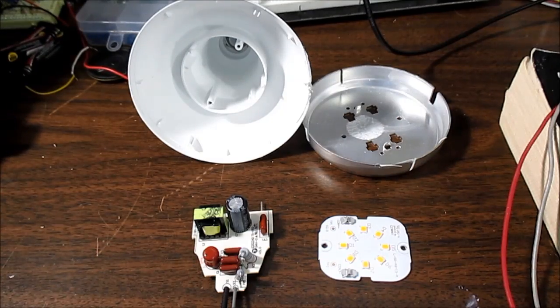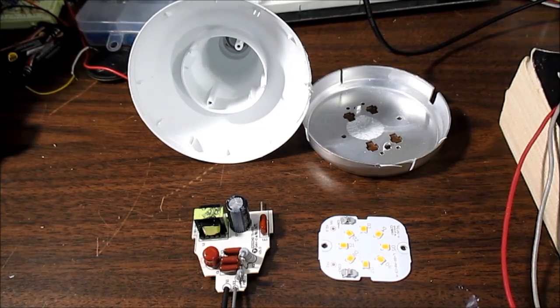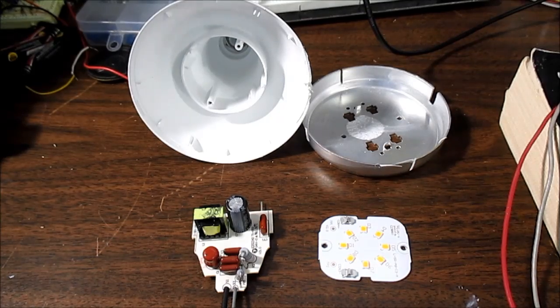So there you have it. The $1 Globe brand Dollar Tree BR-30 reflector light. Amazing what you can get for $1 these days.